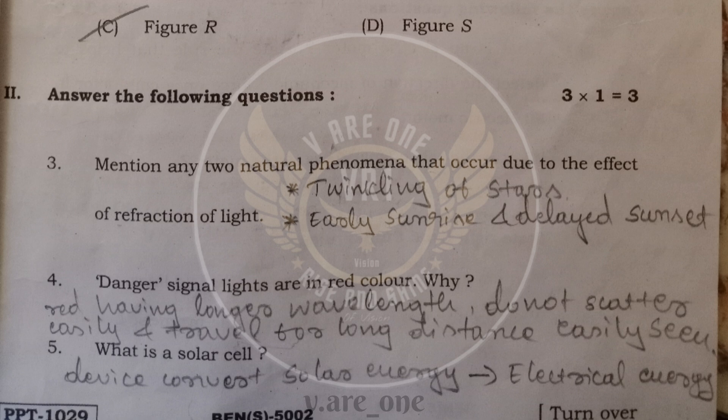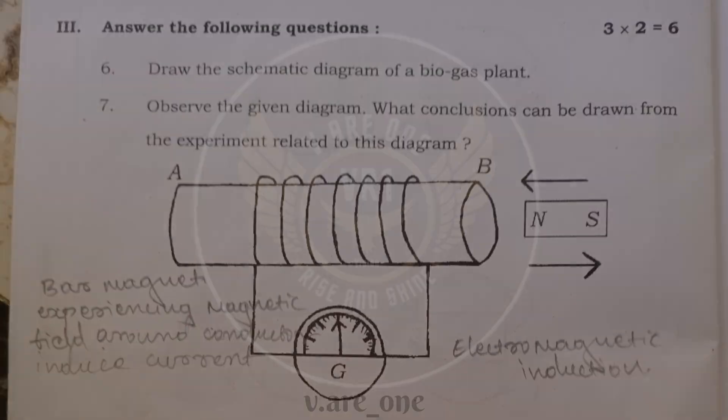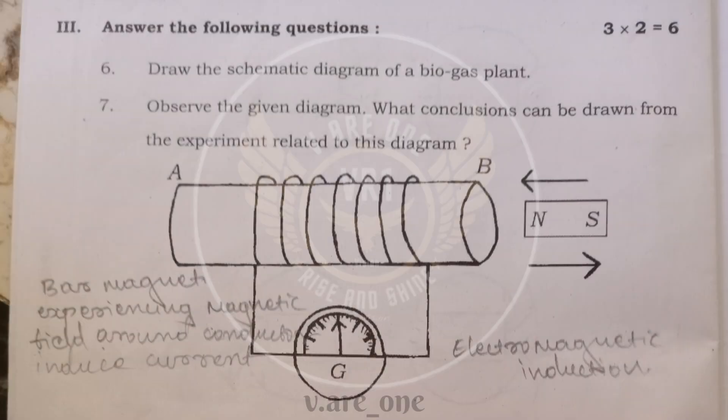And fifth question is what is solar cell? Solar cell is a device which converts solar energy to electrical energy. Sixth question, you need to write the biogas plant diagram.